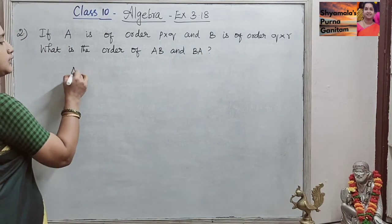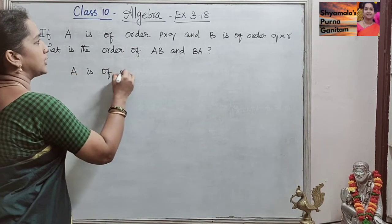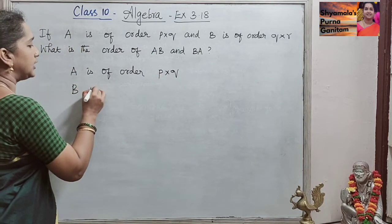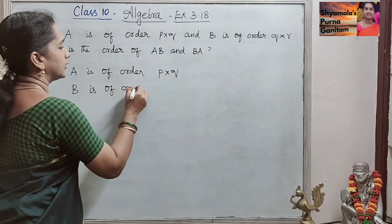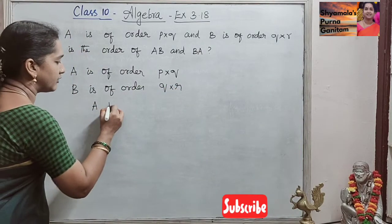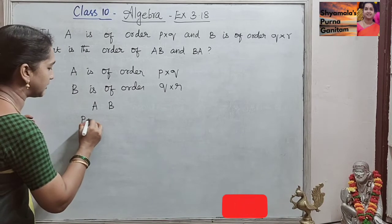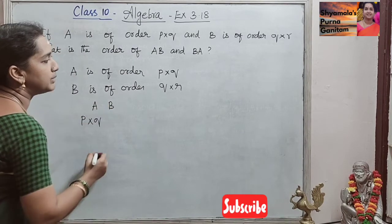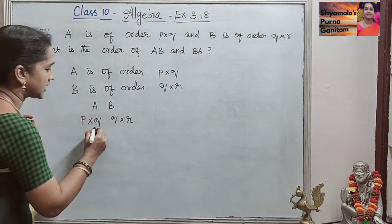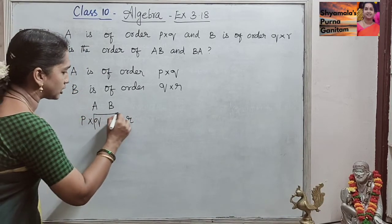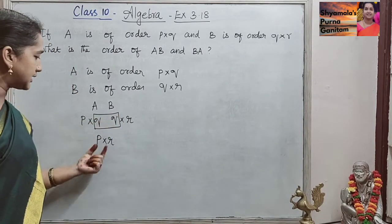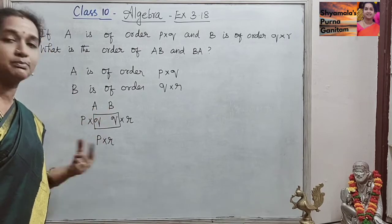A is of order P cross Q and B is of order Q cross R. When we are multiplying AB, for A it is P cross Q and for B it is Q cross R. We are asked to find the order of AB. The order of AB is P cross R, since the inner dimensions match. So the order of AB is P cross R.